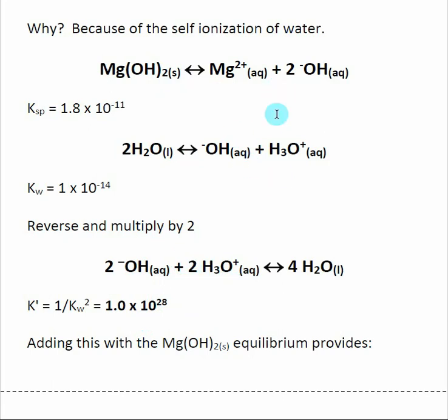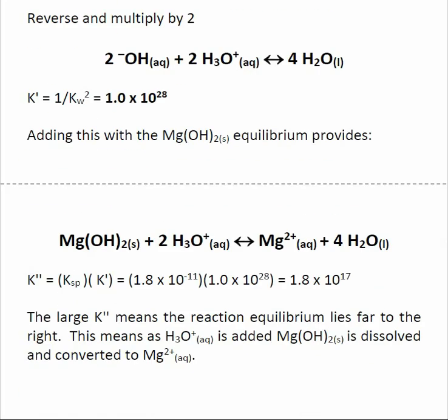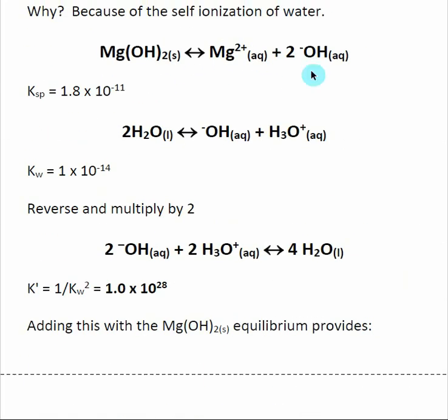We're going to combine these two pieces. This reaction and this reaction, we're going to combine them and say what's going to be the new K value. Which side does our equilibrium lie? So when I add these two reactions together, I get this reaction.